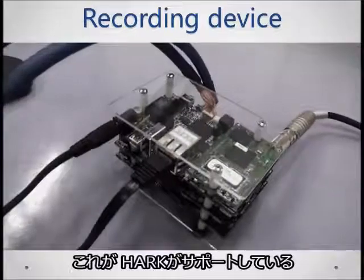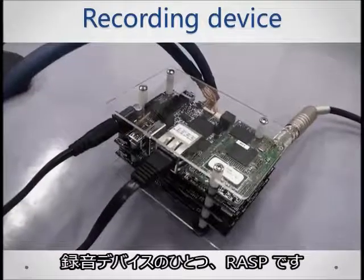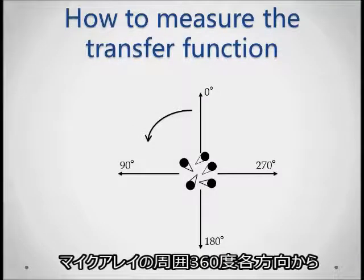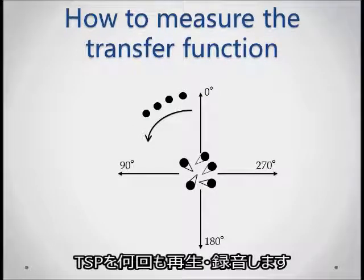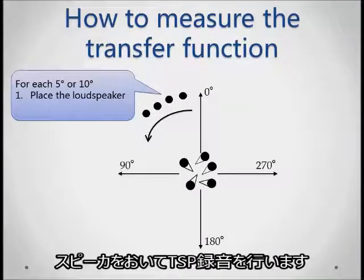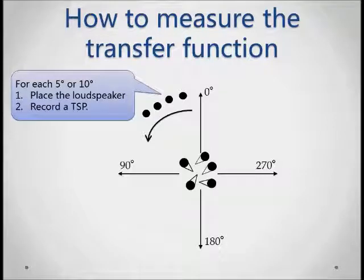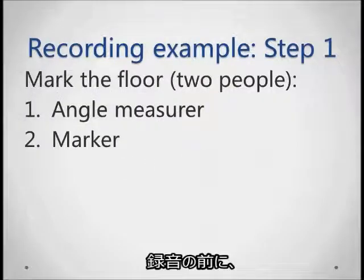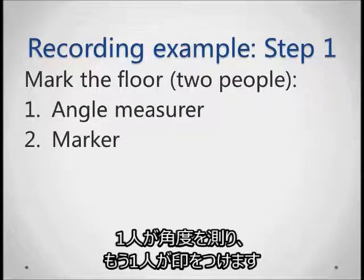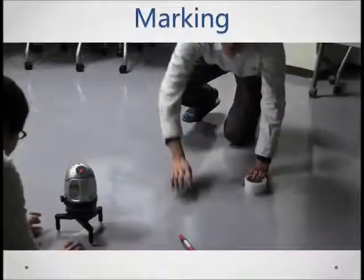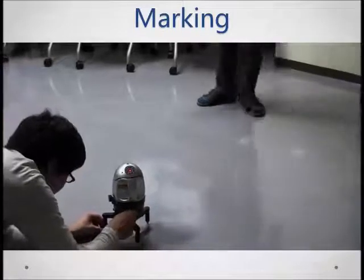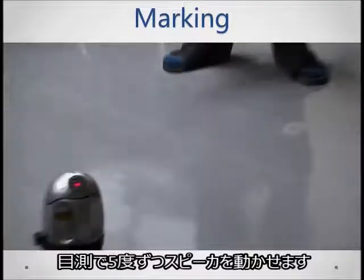This is the RASP recorder, one kind of recording device that you can use. In general, we play and record the TSP many times, 360 degrees around the microphone array. For every 5 or 10 degrees, you would place a loudspeaker and record the TSP. The first step is to mark the floor to make the placement of the speakers easier. You'll need two people — one to measure the angle and another to mark. In this example, we measure every 15 degrees around the microphone array and mark them; these will be our guide when moving the speaker every 5 degrees.